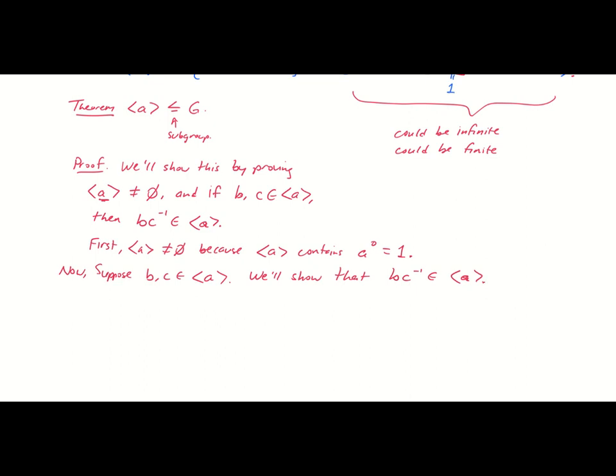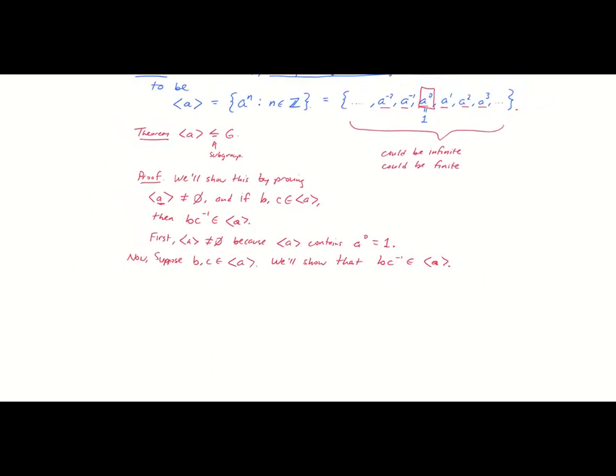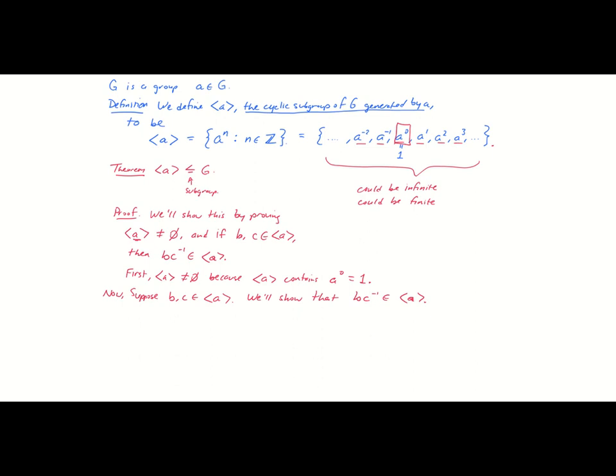Now this is an exercise in unpacking definitions. Let's return and see what it means for B and C to belong to this set. We said what it means to belong to the set is that you are some integer power of A. Could be positive, could be negative, could be zero, but have to be an integer power of A. So since B and C both belong to A, there exists